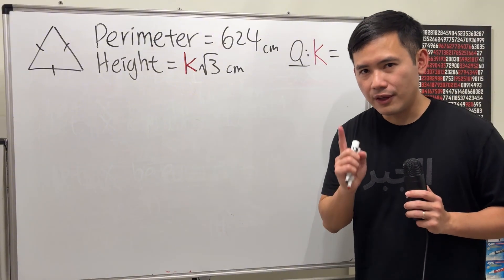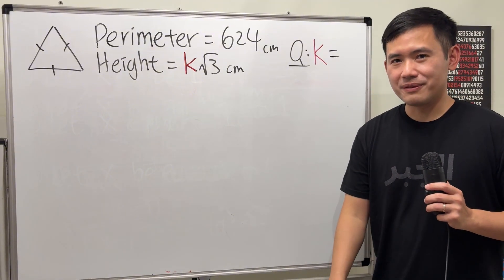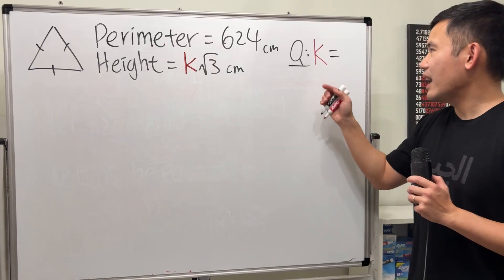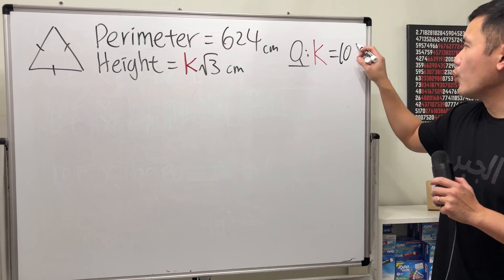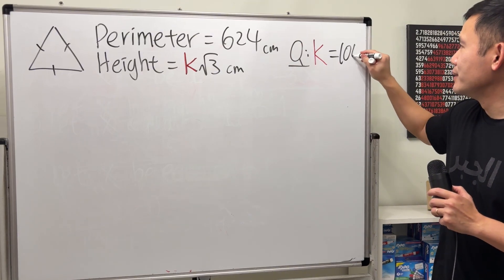So if you haven't done so already, please pause the video, try it first before you watch the solution. Done? Okay, I will tell you guys the answer. k is equal to 108... I mean 104. And then we are done.